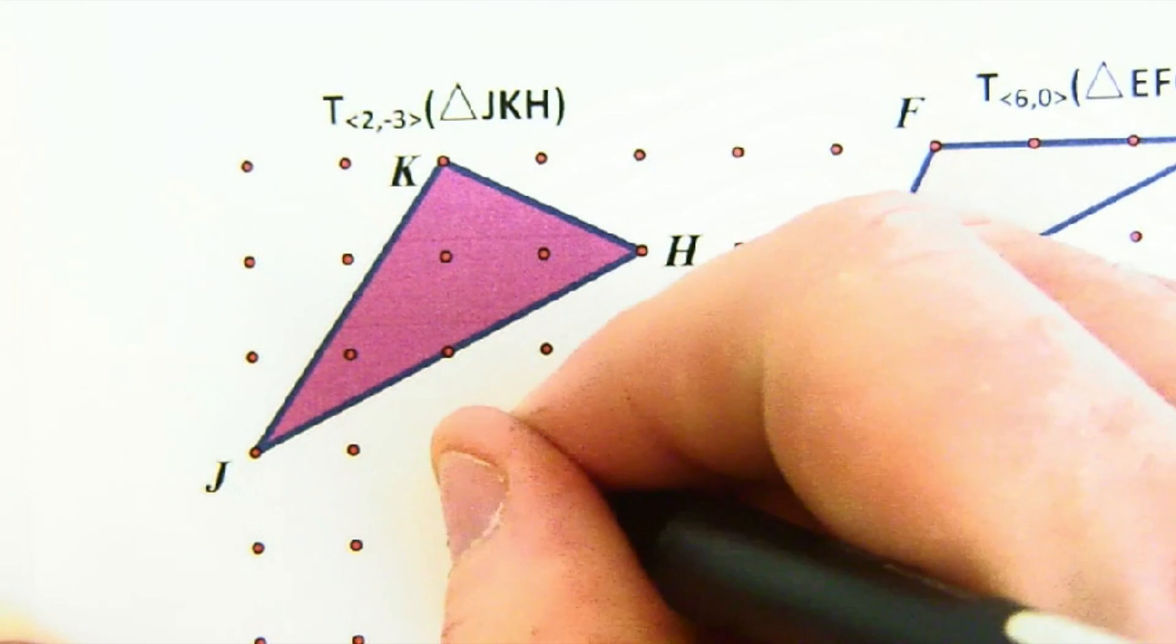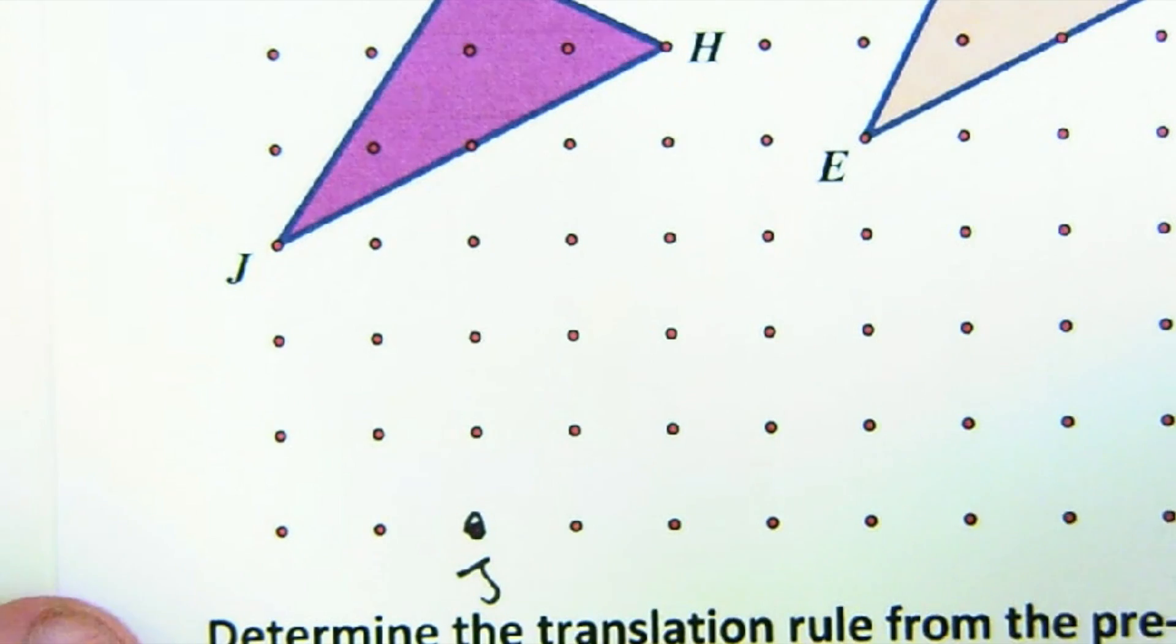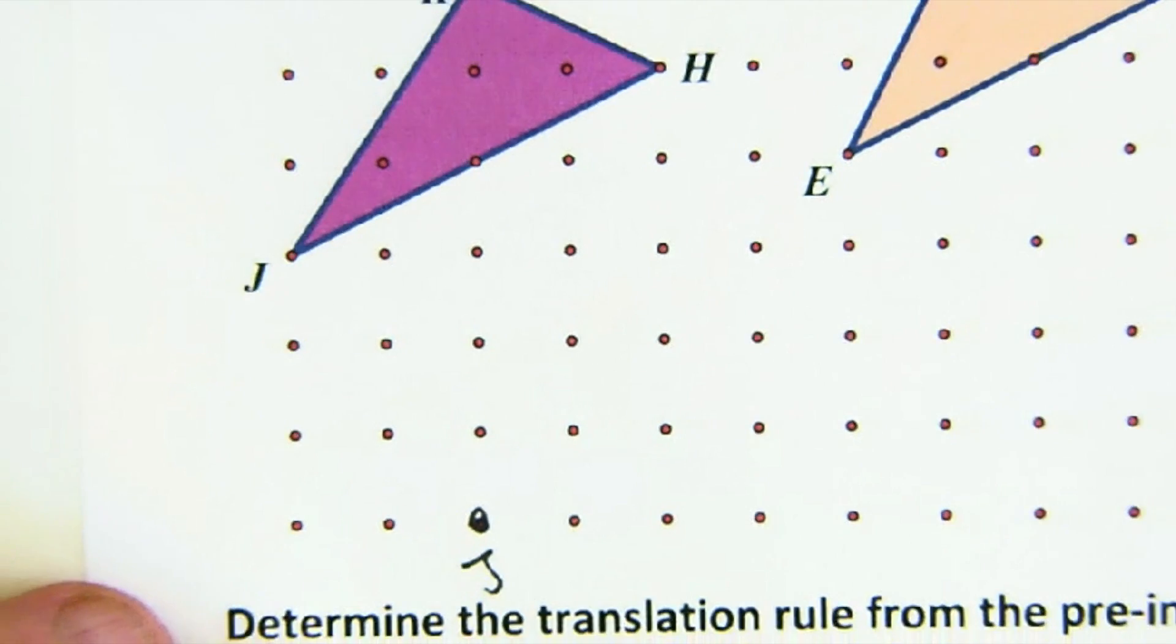So j goes 1, 2 to the right, 1, 2, 3 down. j prime, oops, sorry, j prime will be down here.